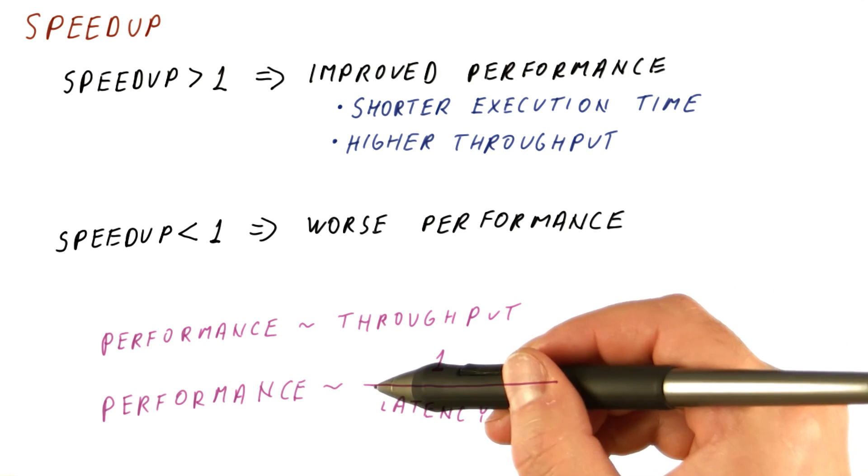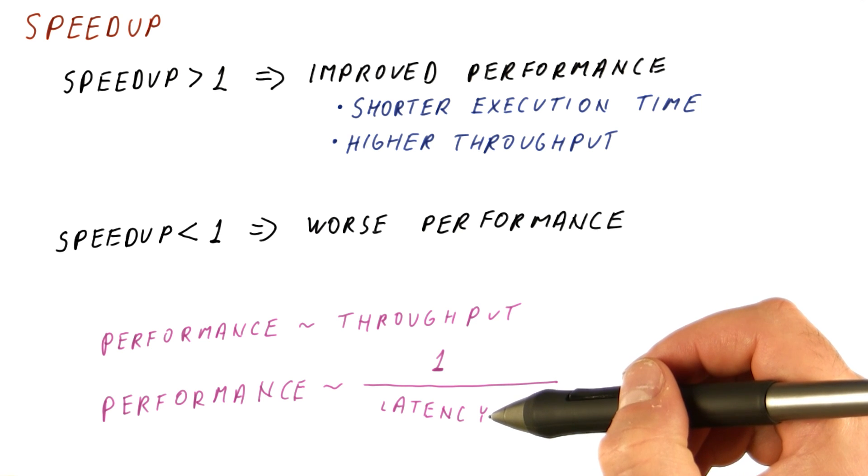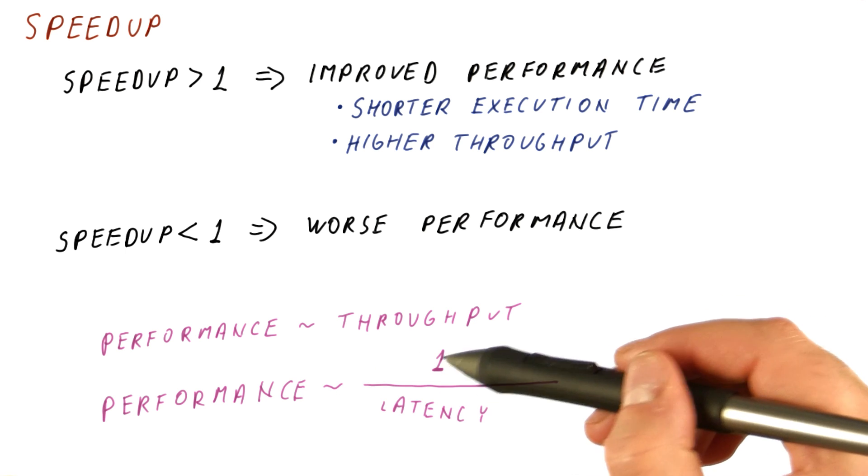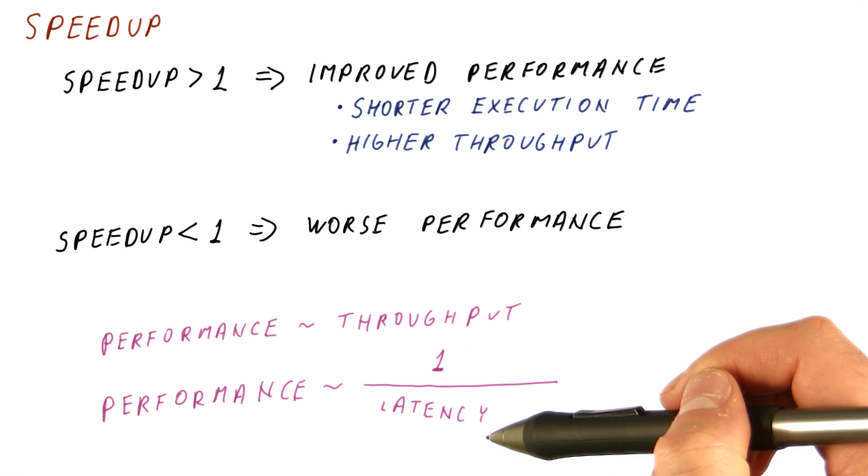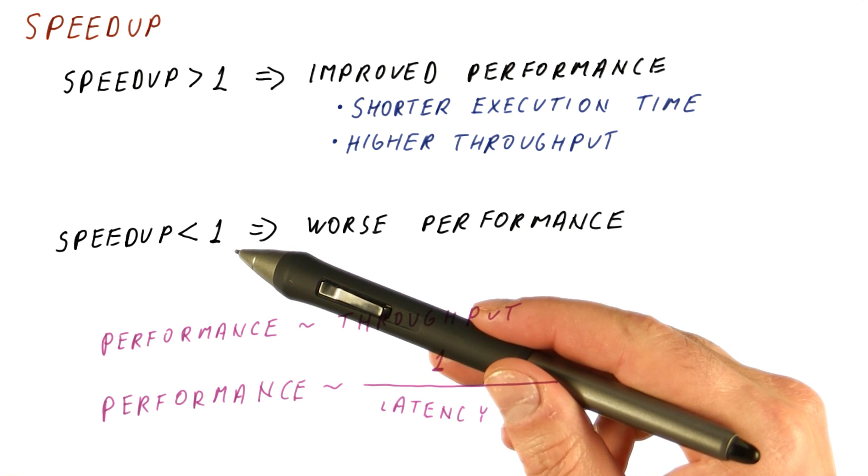However, performance is proportional to one over latency. So if we have something like it takes two seconds to do something, that's a latency. Performance, in this case, is one over that. So when computing speedups, we actually divide the old latency with the new latency.